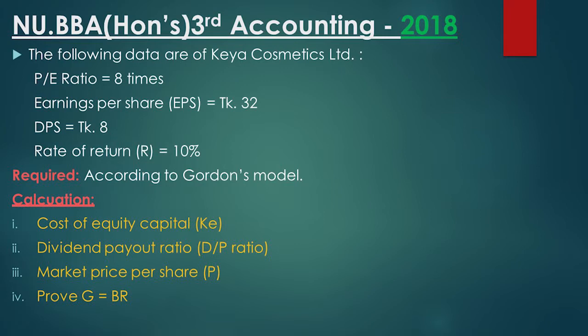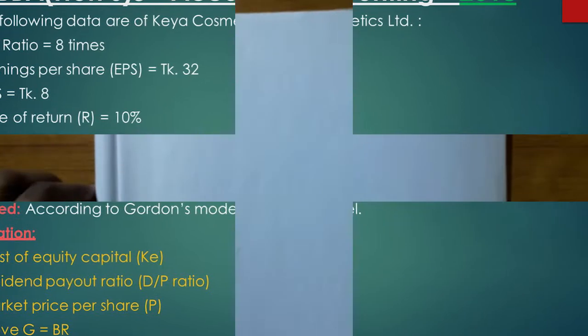The first thing is G is equal to B into R. Let's start with our methods and solutions. The first requirement is the cost of equity capital KE.